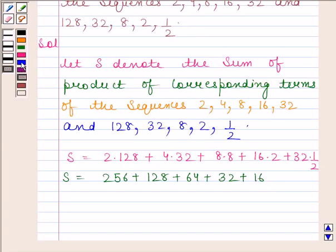We know that sum of N terms of GP, that is, S_N is given by a(1-r^N)/(1-r) if r is less than 1.